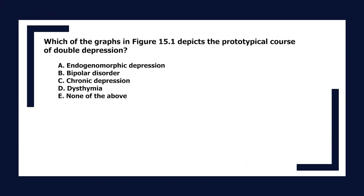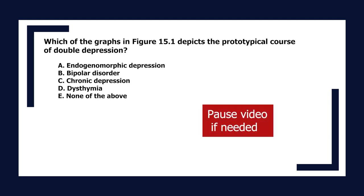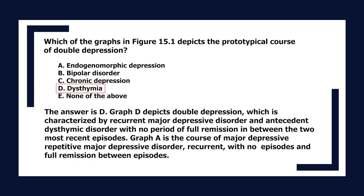Which graph depicts the prototypical course of double depression? A. Endogenomorphic depression, B. Bipolar disorder, C. Chronic depression, D. Dysthymia, E. None of the above. The answer is D. Graph D depicts double depression, characterized by recurrent major depressive disorder with antecedent dysthymic disorder and no period of full remission between the two most recent episodes.